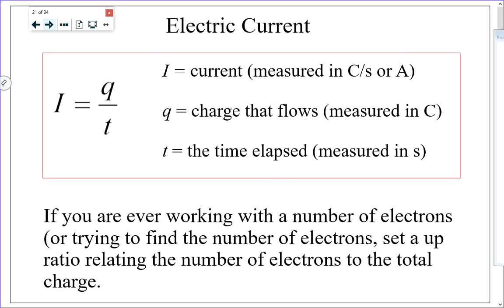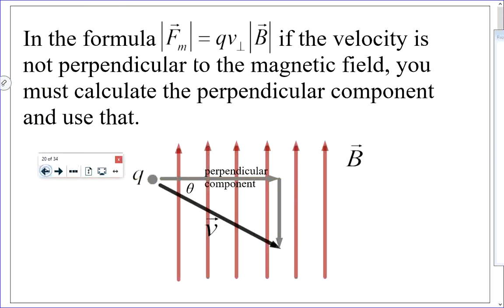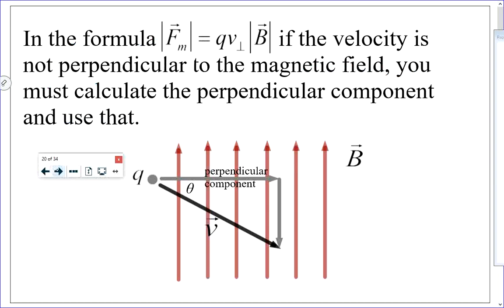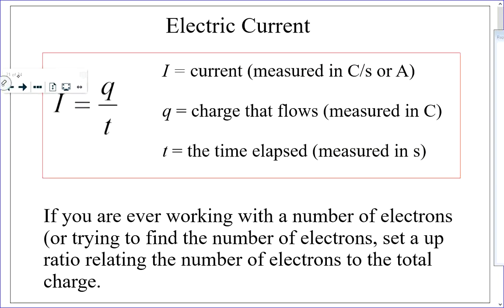For electric current, you need to know how to use this formula. The reason it's taught is usually because you calculate current to use in the magnetic force formula. Sometimes you are simply asked questions like: if the current is 5 amps, how many electrons flow in two minutes? There are lots of examples of that.